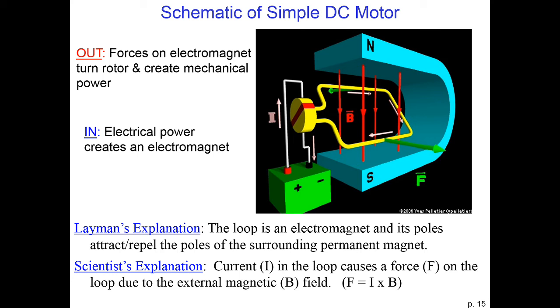To make this work, once the loop has done a half turn, the current is switched, so the current is still going clockwise through the loop. Originally, I think this was done with a metal brush, so the idea is that the polarity just switched as the loop turned around and around.